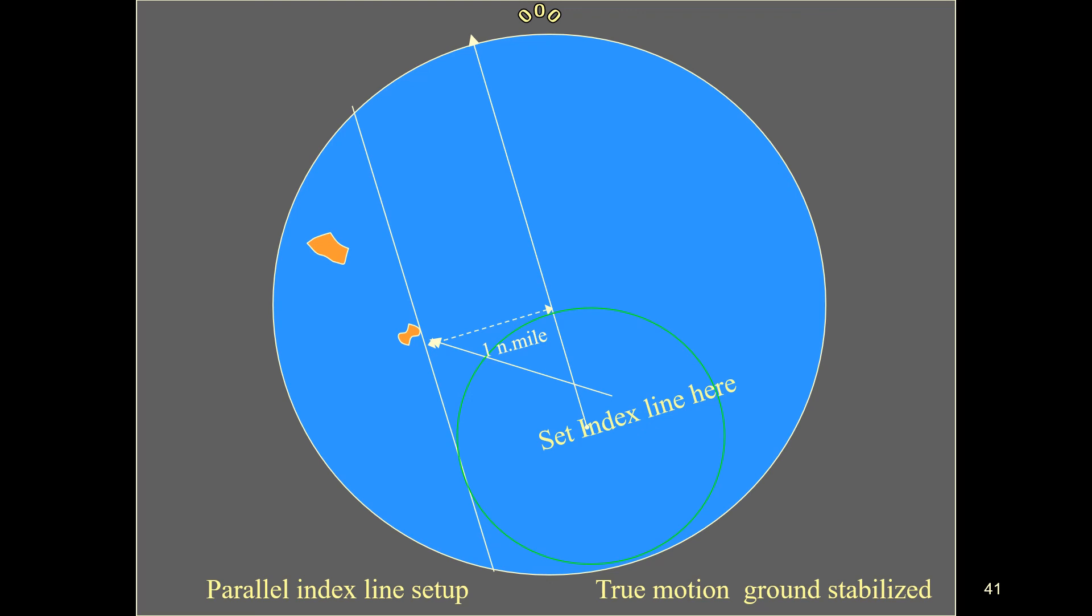The variable range marker circle should move along the line like a ball rolling along a straight edge.